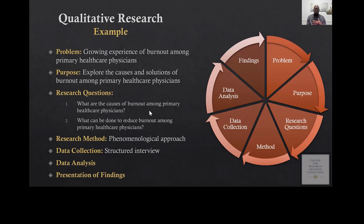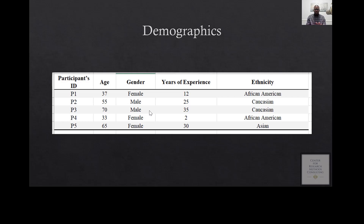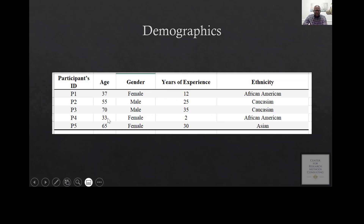Each participant was asked nine questions. Five participants were interviewed. Looking at their demographics, you can see their ages, gender — three females and two males — their years of experience, and ethnicity. This demographic information will be taken into consideration when reviewing their transcripts. Since we interviewed five participants, we're going to have five transcripts.